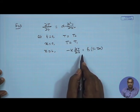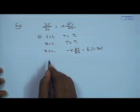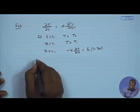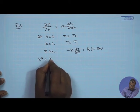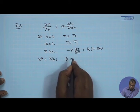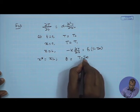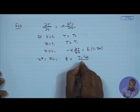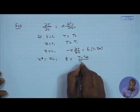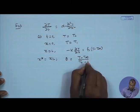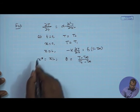At t equal to 0, T equals T_naught. At x equal to 0, T equals T_1. At x equal to L we have a Robin mixed boundary condition: k del T / del x equals h(T minus T_infinity), meaning heat transported by conduction at this boundary is taken away by convection, where h is the heat transfer coefficient and T_infinity is the ambient temperature.